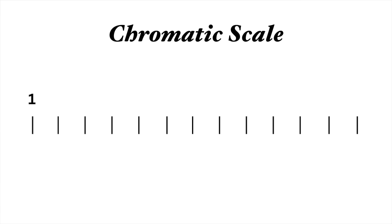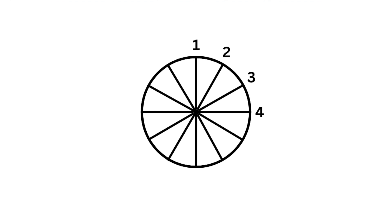In Western music, we split octaves up into 12 notes, and when you play those in series, it is known as the chromatic scale. At the end of the 12 notes, the scale returns to the same note one octave higher and the series starts all over again. So instead of thinking of a scale laid out as a line, we can visualize it as a circle that returns upon itself.